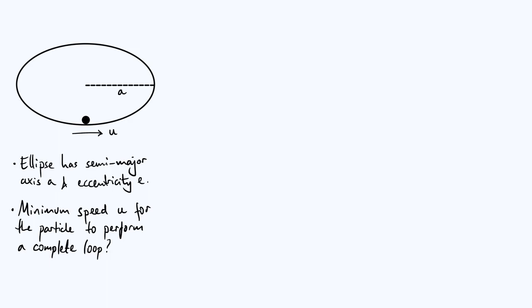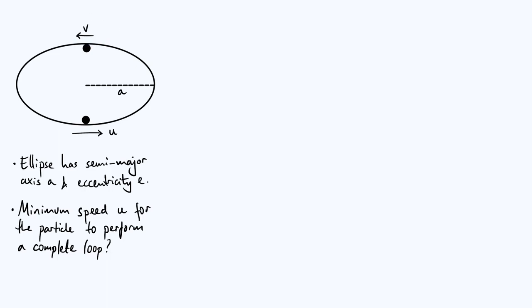I'll also be assuming that you've either watched my previous video on the circular loop-de-loop, or that you already know how to solve that problem, because there are certain details I might not explain in as much detail as I did there. So let's get straight into solving the problem. As we did in the circular case, we are going to consider the state of the particle when it's just reached the top of the loop, where it's going to have some velocity to the left, which I'll call V.